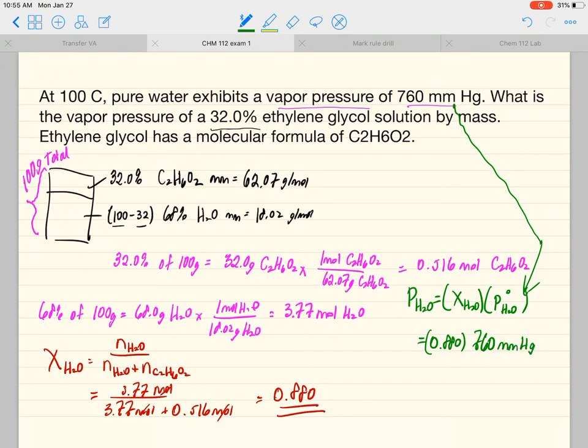So at 100 degrees Celsius, it's very hot, 0.880 times 760 is equal to 669 millimeters of mercury. So that's the vapor pressure.